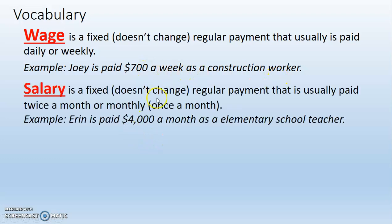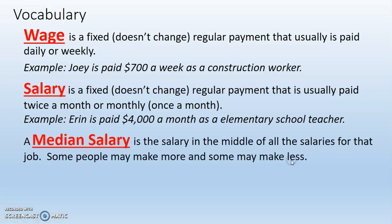Salary is a fixed, which doesn't change, regular payment that's usually paid twice a month, or monthly, which means once a month. Example: Erin is paid $4,000 a month as an elementary school teacher.